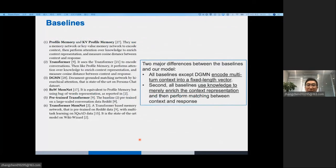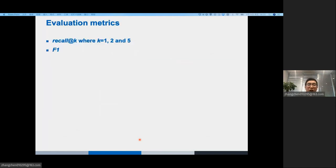We compare some retrieval-based baselines. There are two major differences between the baselines and our model. First, all baselines, except DGMN model, encode multi-turn context into a fixed-length vector. Second, all baselines use knowledge to merely enrich the context representation and then perform matching between context and response. Here are the evaluation metrics we have, recall at K and F1 for both tasks.